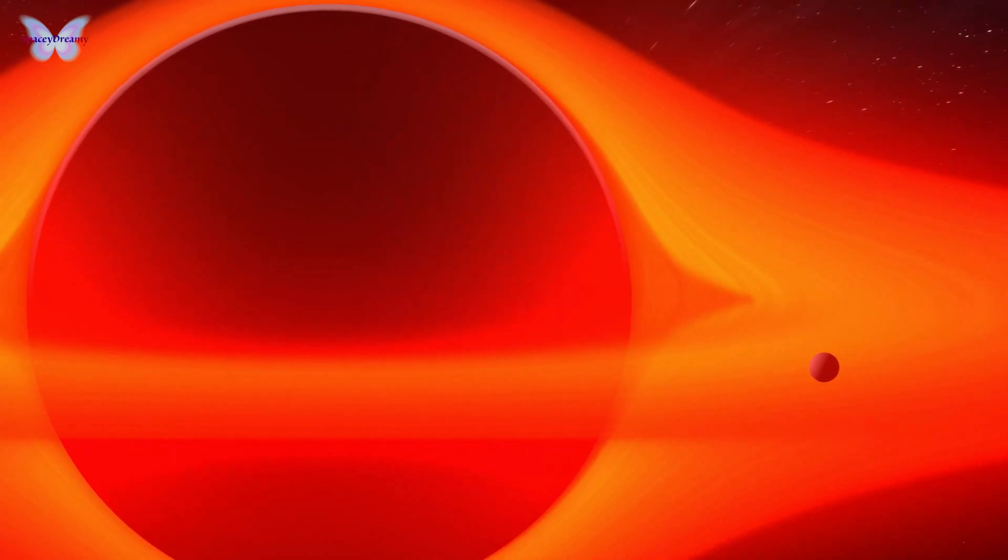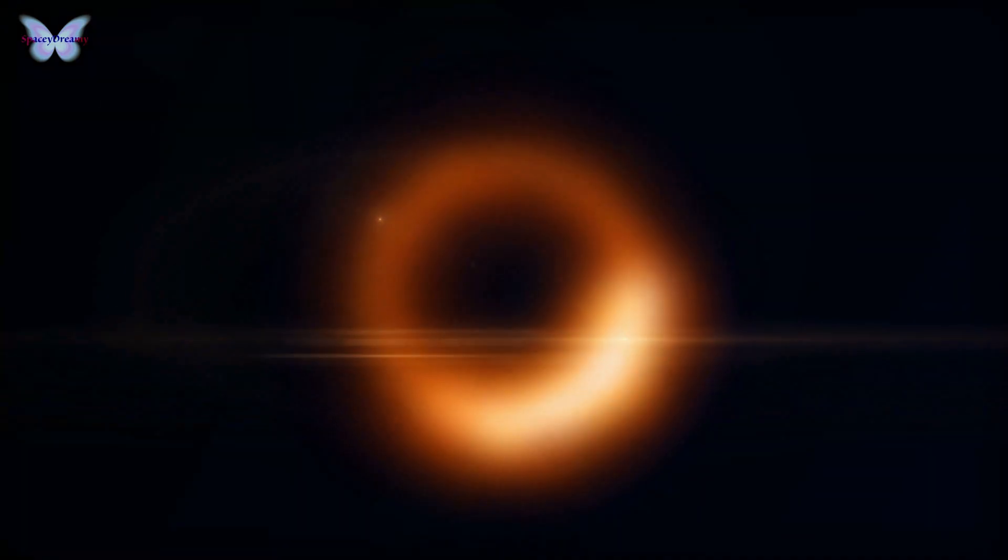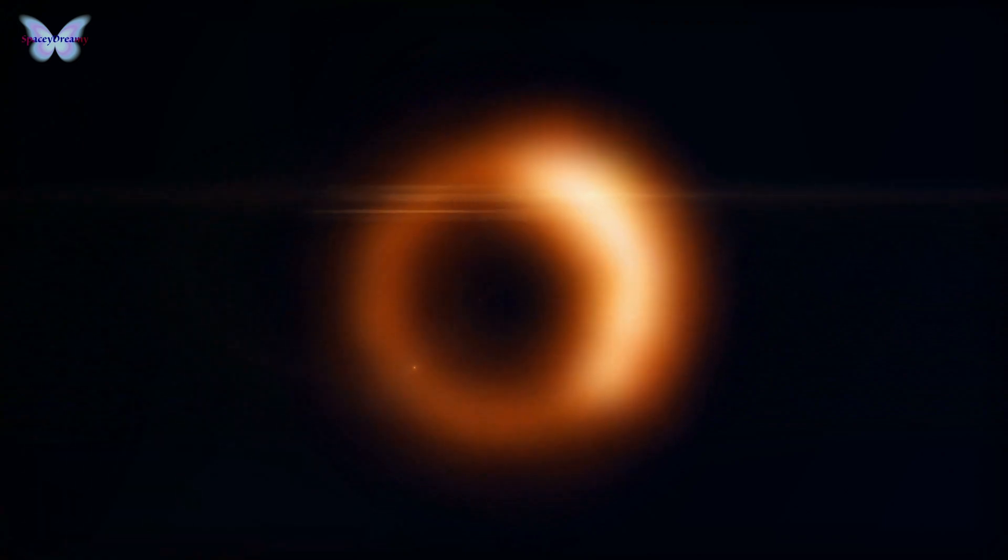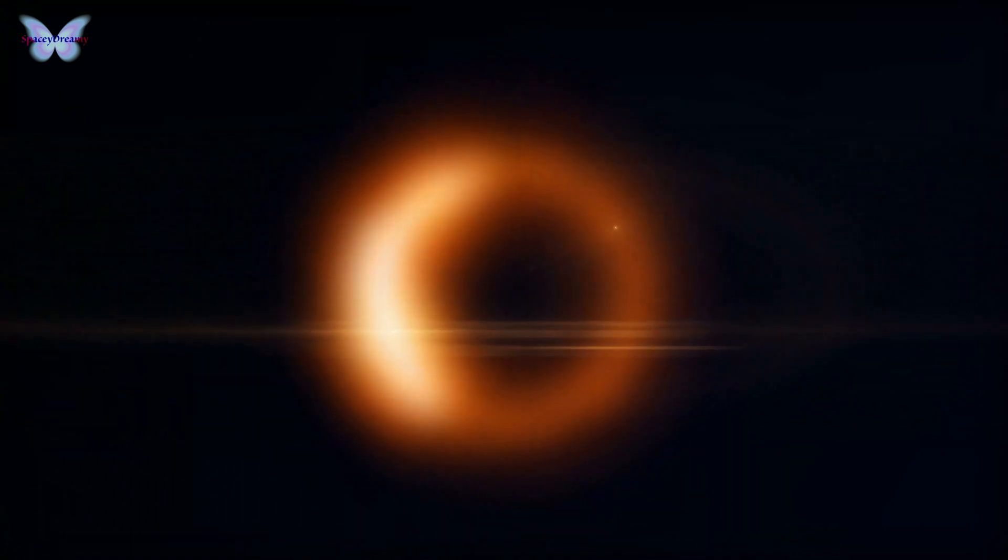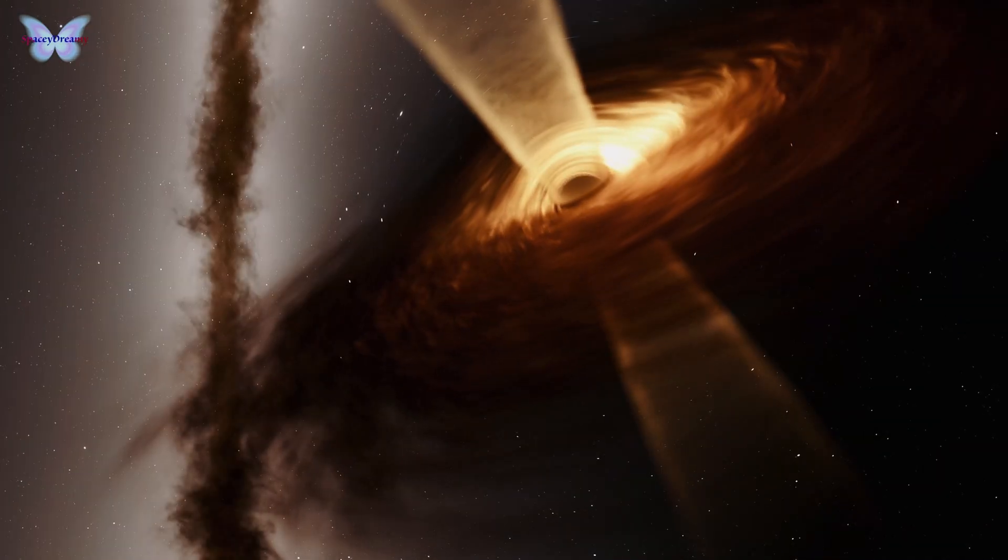These giants can have masses ranging from hundreds of thousands to billions of times that of the Sun. For example, the black hole at the center of the M87 galaxy, captured in the first ever image of a black hole, has a mass about 6.5 billion times that of the Sun.